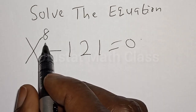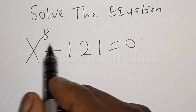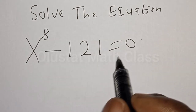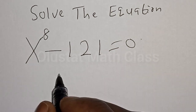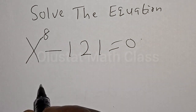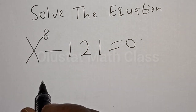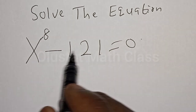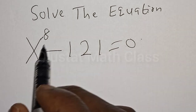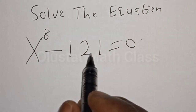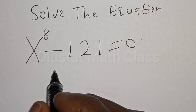Solve the equation s raised to power 8 minus 121 is equal to 0. In this class we quickly want to find the value of s from this given equation s raised to power 8 minus 121 is equal to 0.